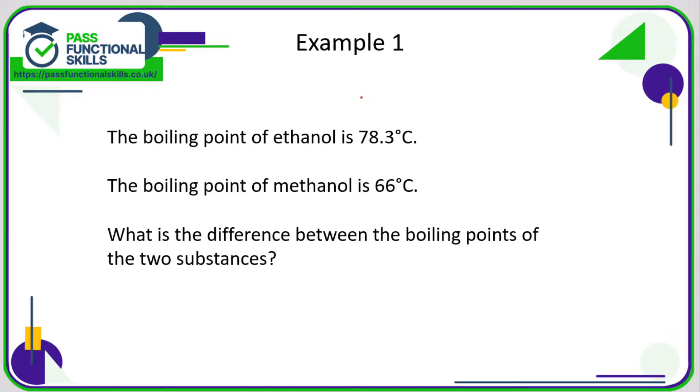Let's take a look at some temperature examples. The boiling point of ethanol is 78.3°C and the boiling point of methanol is 66°C. What is the difference between the boiling points of the two substances?